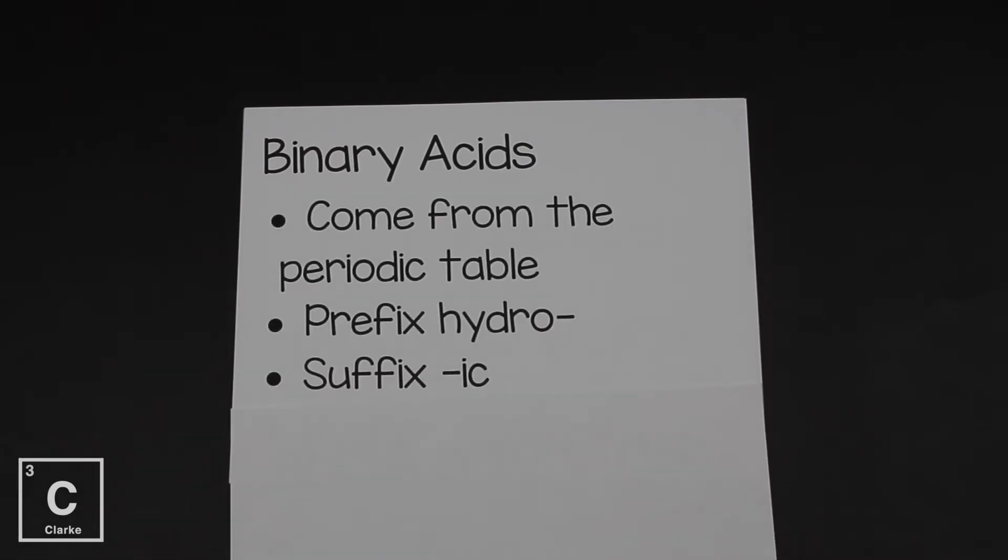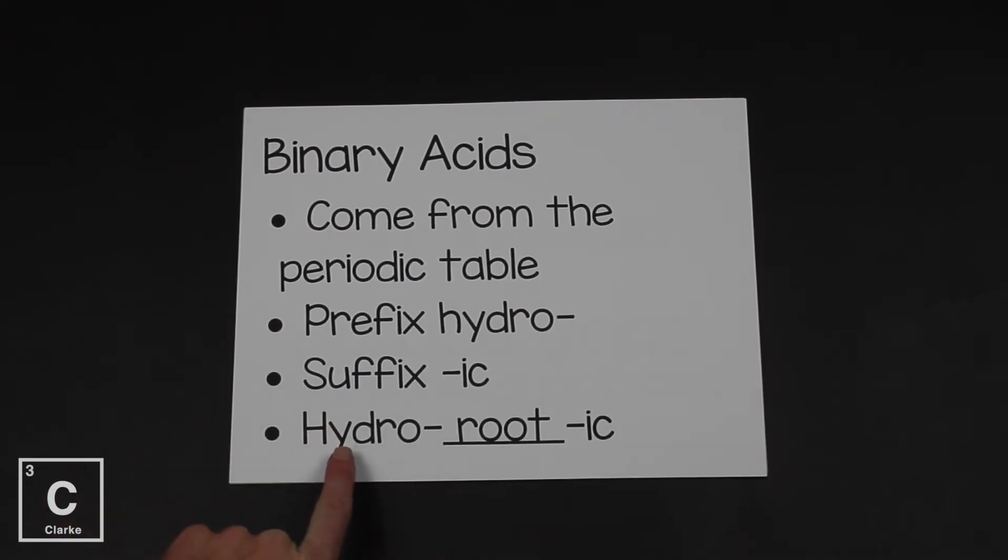And so when we're naming a binary acid, we would look at that non-metal. It comes from the periodic table and we're going to need to use the prefix hydro and the suffix ic. The word would begin with hydro. We would have the root word of the non-metal. And then it's going to end with ic.